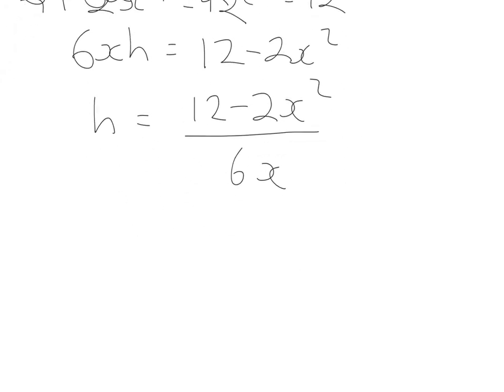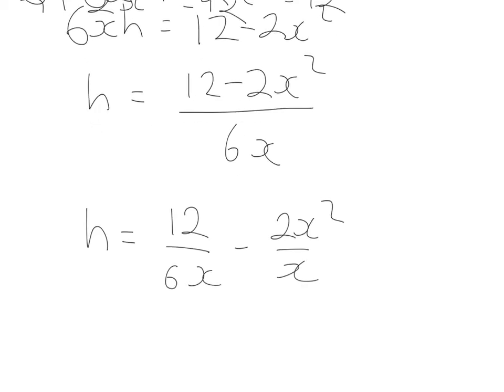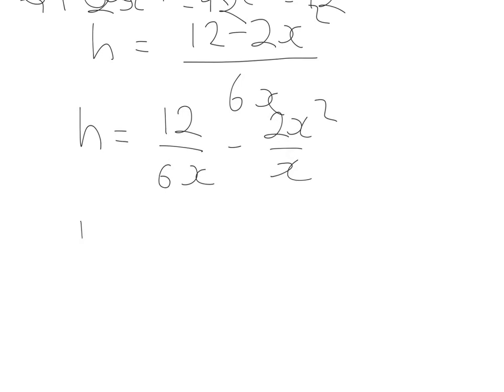I'm just going to split it up into simpler bits. So that's going to be 12/(6x) minus 2x²/(6x). So 12/(6x) is 2/x. x² over x cancels, so that will be minus 2x. Or rather, that should be 6x. So 2/6 gives me 1/3, x² over x is x. So the height can now be given as 2/x minus 1/3 x.